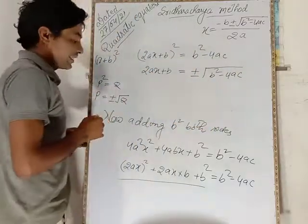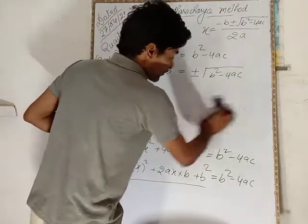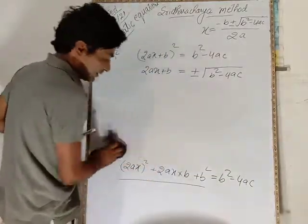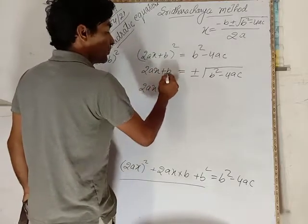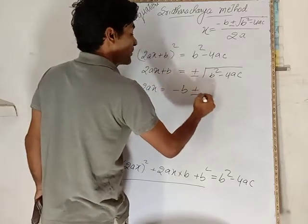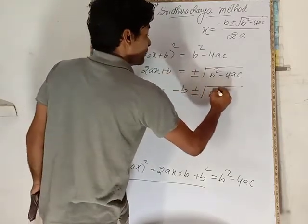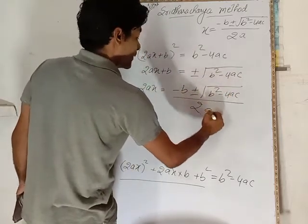We are looking at the same. 2ax plus b is equal to plus minus root b² minus 4ac. Now we have to isolate x. So 2ax equals minus b plus minus root b² minus 4ac.